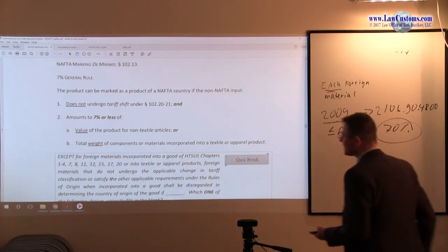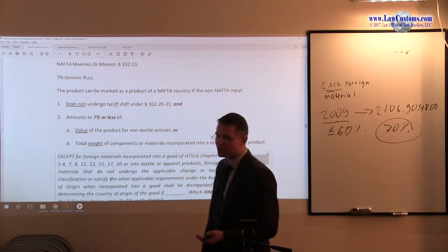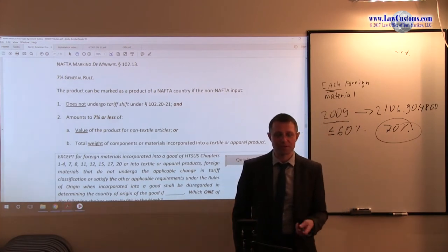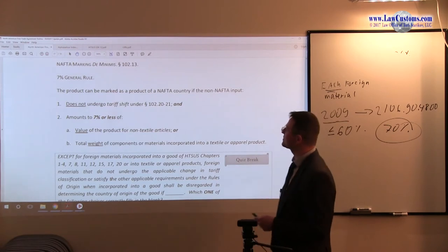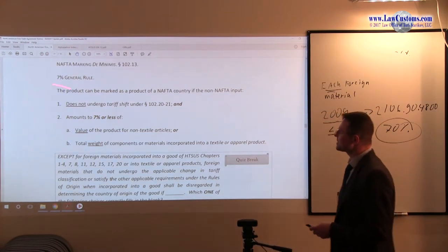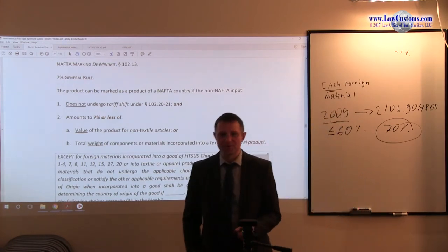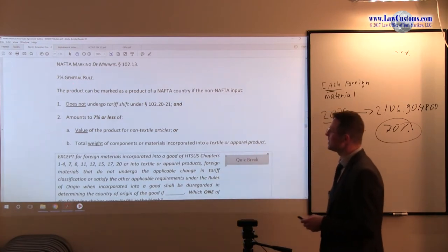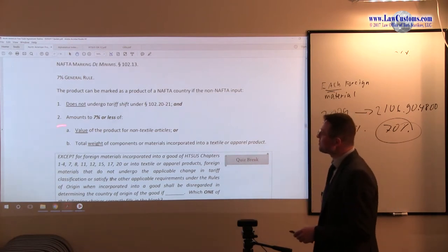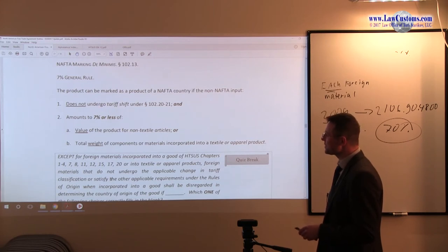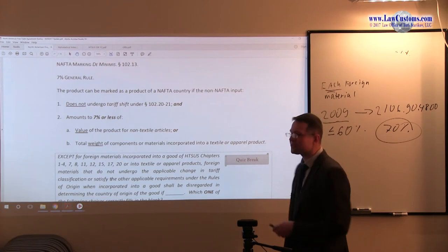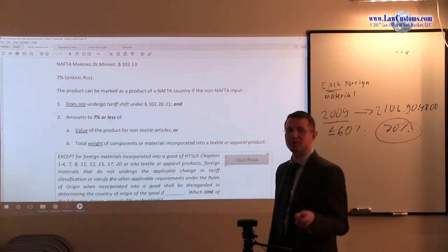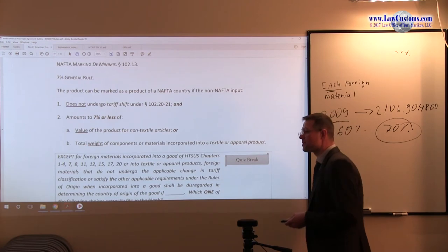Alright, so just like with de minimis rules of origin under the General Note 12 under the HTS-US for NAFTA, NAFTA marking also has de minimis definitions and they are available under 102.13. And just like under the General Note 12 HTS-US, you also see that 7% rule. And that 7% rule is applicable to value if it is non-textiles and weight if it is a textile or apparel product. So your knowledge from General Note 12 is portable or almost portable. We shall see why I say almost into the NAFTA marking rules.